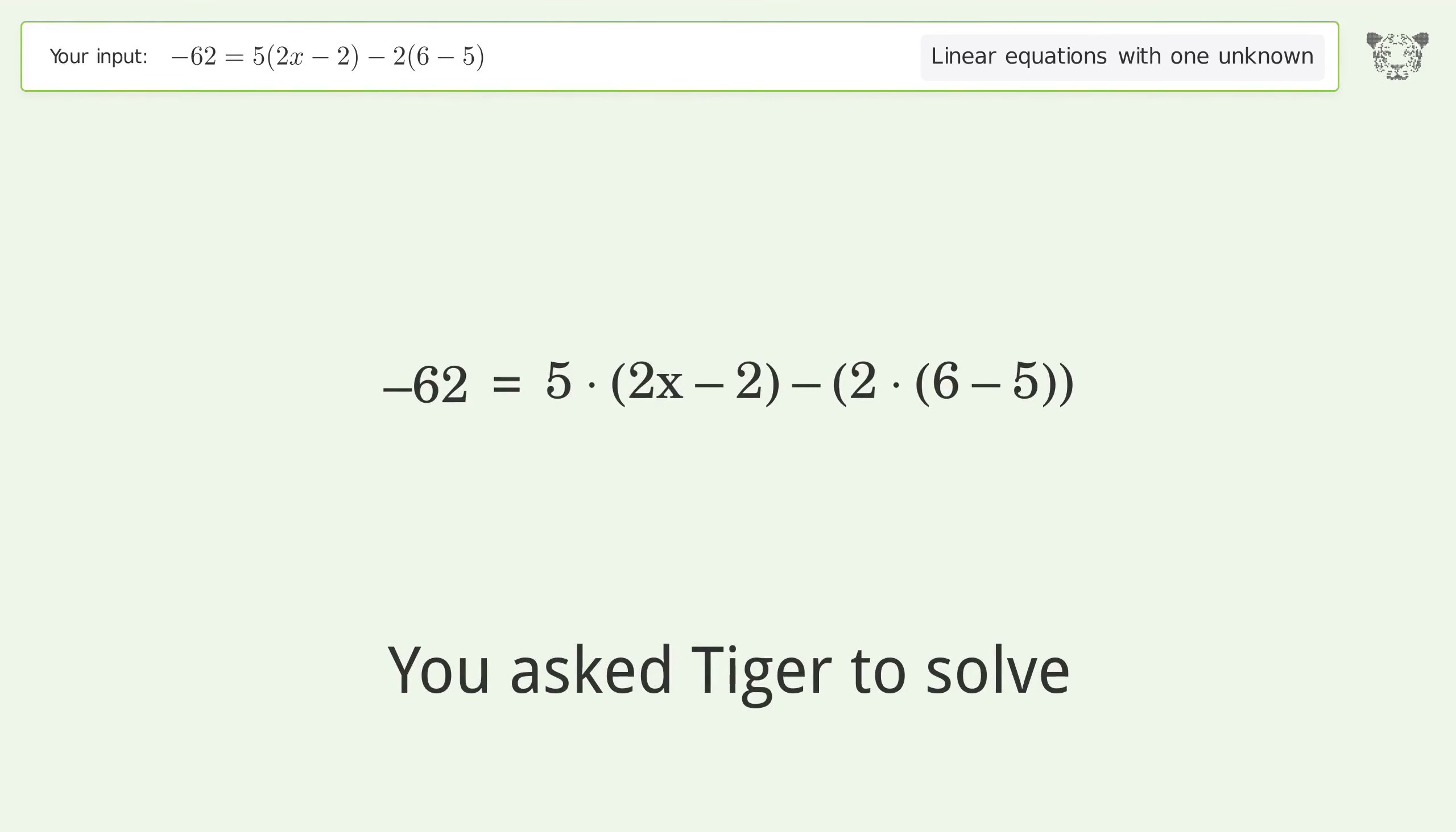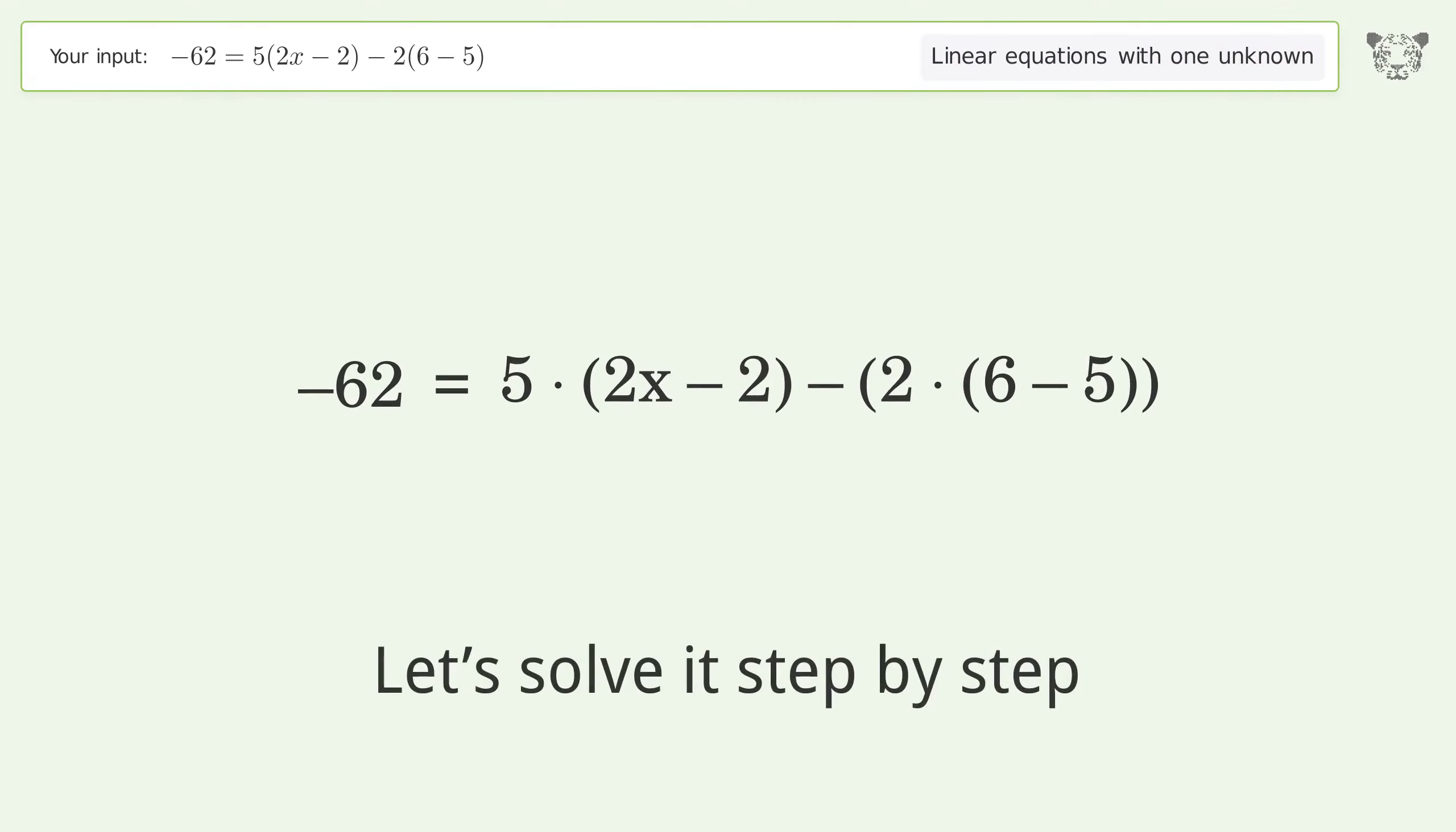You asked Tiger to solve this. It deals with linear equations with one unknown. The final result is x equals negative 5. Let's solve it step by step. Simplify the expression.